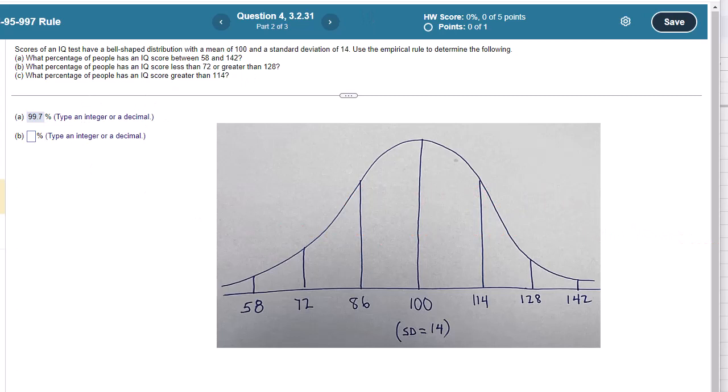Okay, what percentage of people have an IQ score less than 72 or greater than 128? So recall, here's my curve again. 95% are within two standard deviations, so that's between the 72 and 128. So we're looking for what's outside of that. We're looking for these two tails here. So if 95% is in the middle, what's left for the tails? Good, 5%.